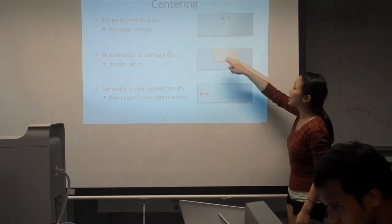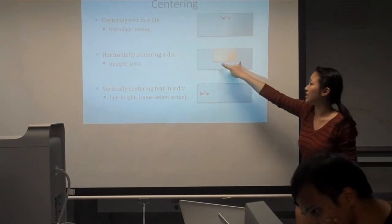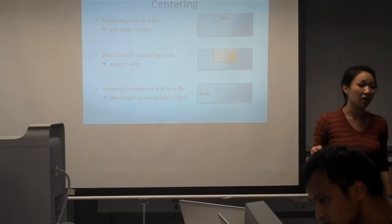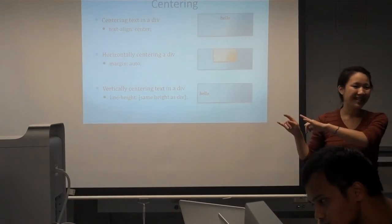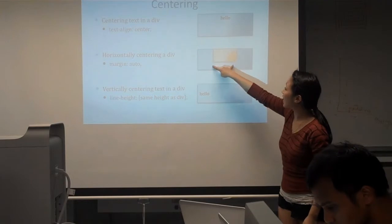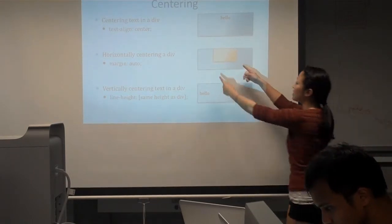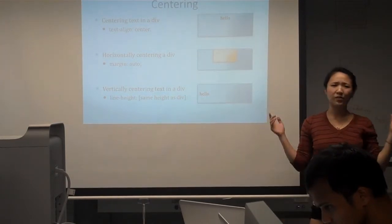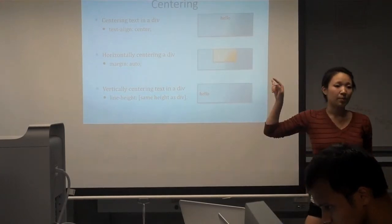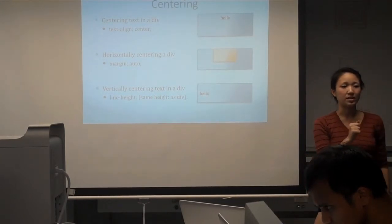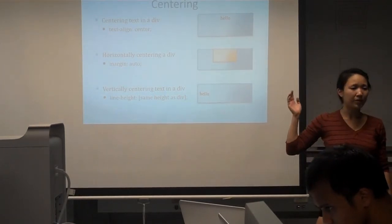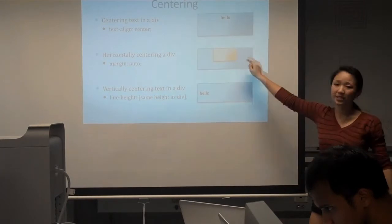The important thing to note is you have to have a fixed width on the element. If you have width equals auto, it won't work, because the browser doesn't know how much to measure. You have to have like a pixel width — for example, a thousand pixels — then the CSS rendering engine will be able to calculate what the margins should be. But it won't work if you don't have a set width. A lot of people ran into trouble with this last year, so make sure you remember this fact.